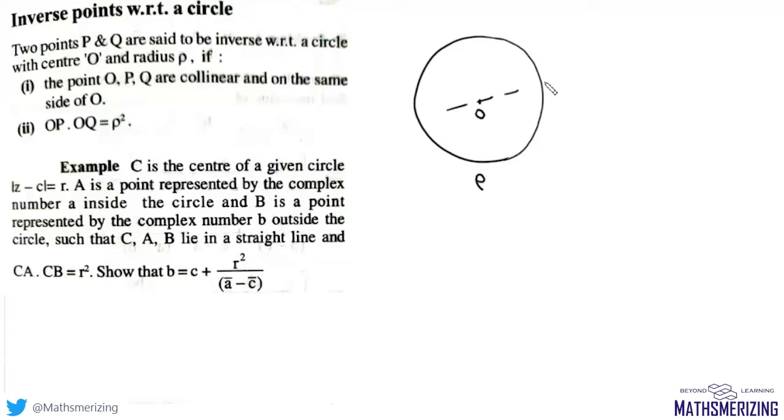So these three points O, P, and Q must be collinear on the same side of O, and OP times OQ must equal ρ squared.